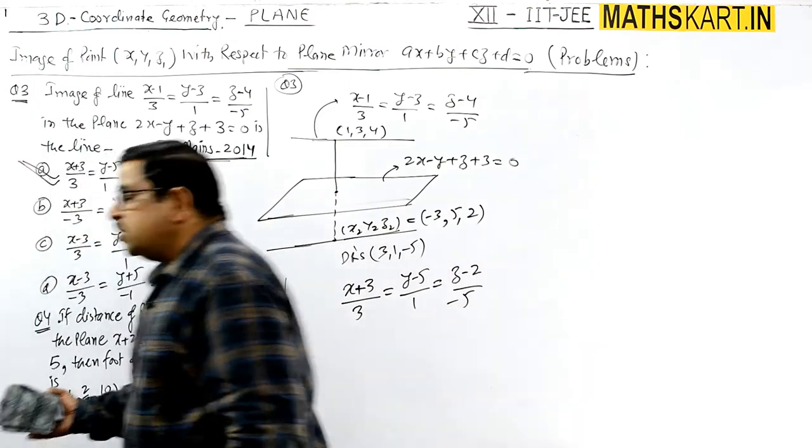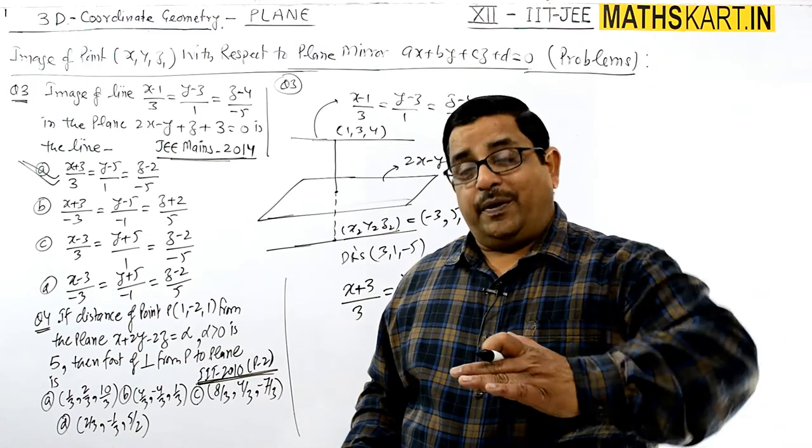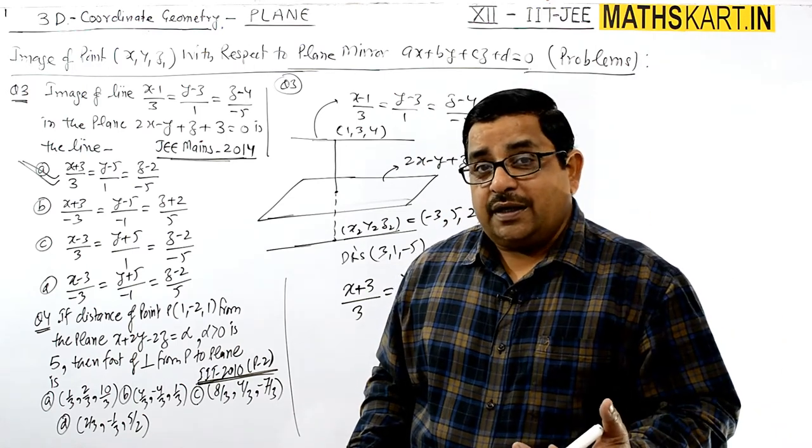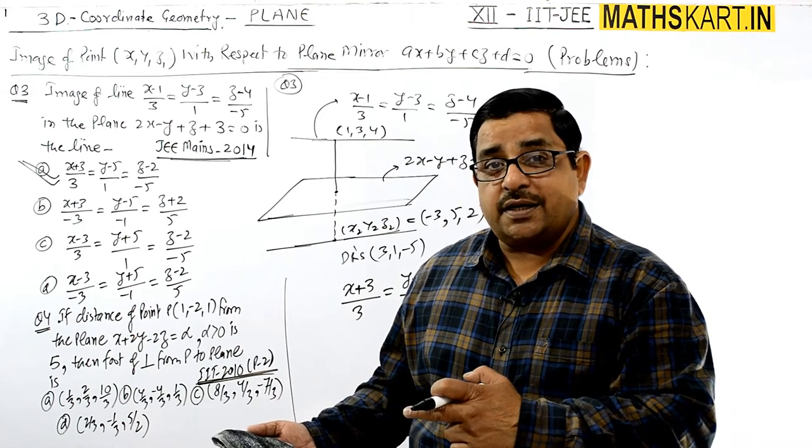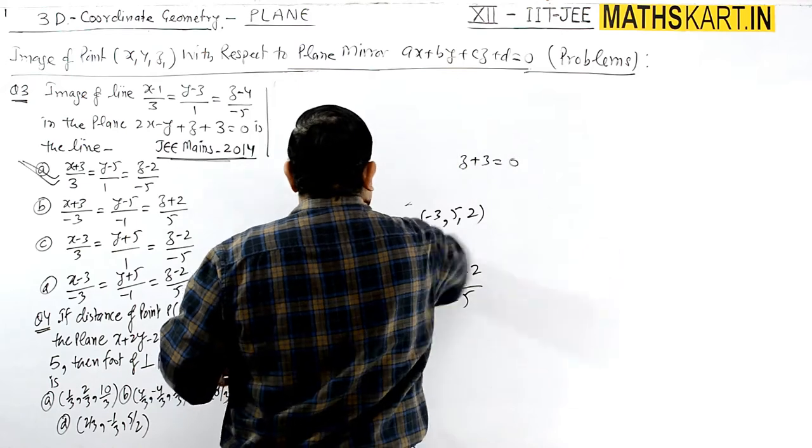So a very good question. We have the theoretical concept - the formula for the image of a point against a plane. But here the image of a line is asked, so we can solve that too.